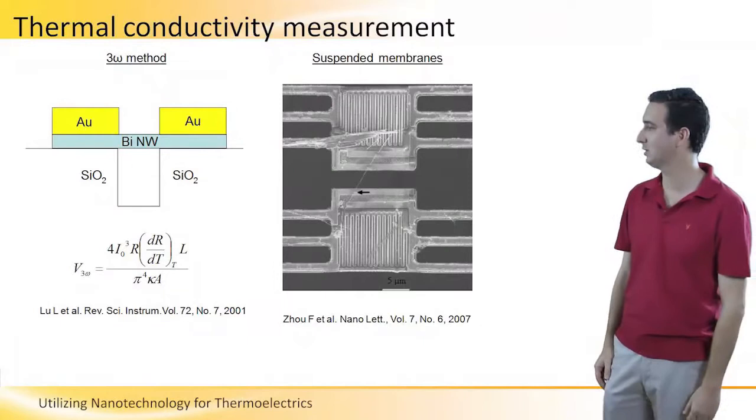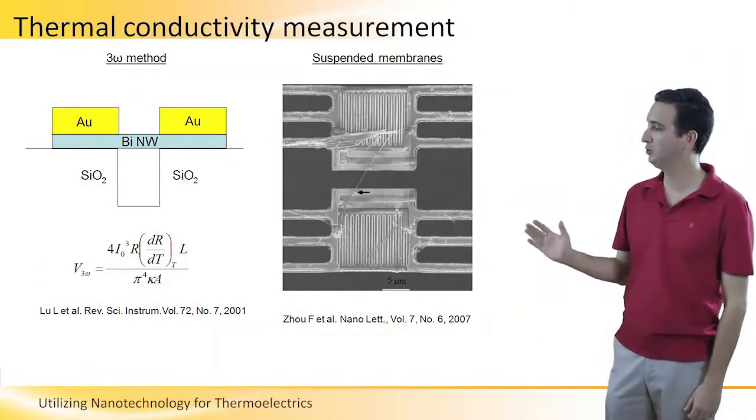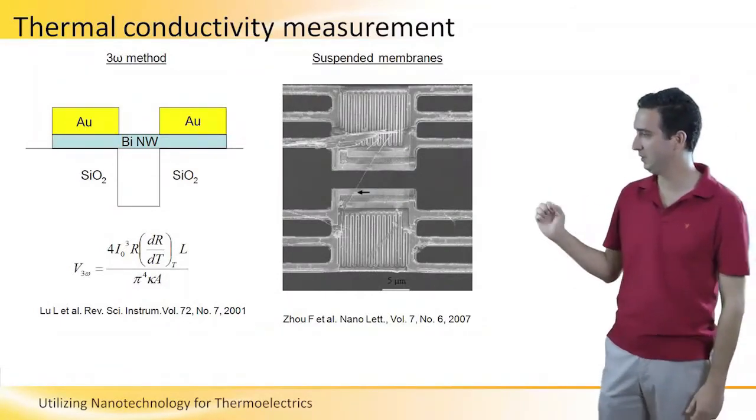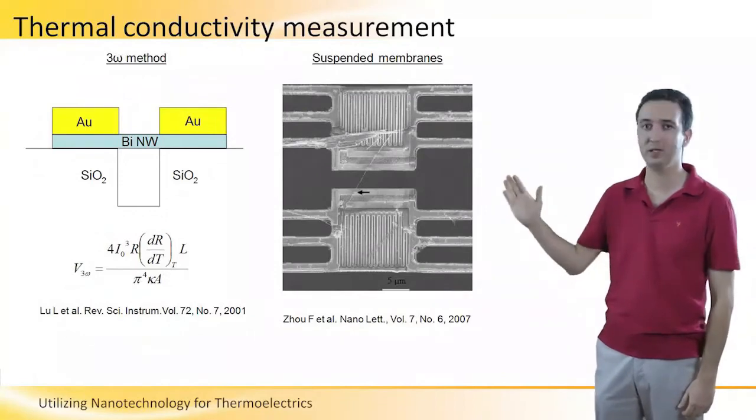In order to measure the thermal conductivity, there are two main ways to do it. The first one is called the 3-Omega method.